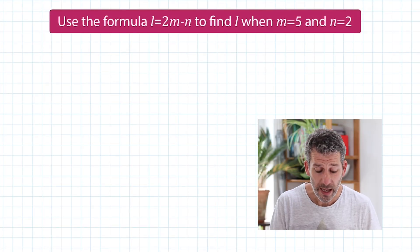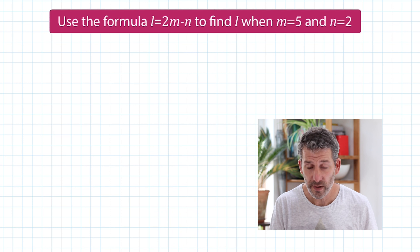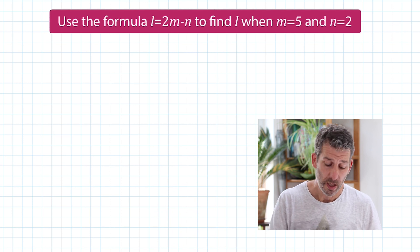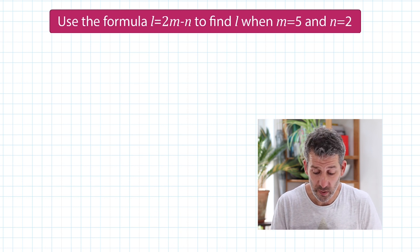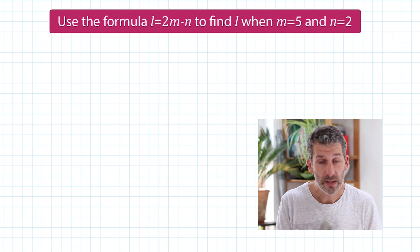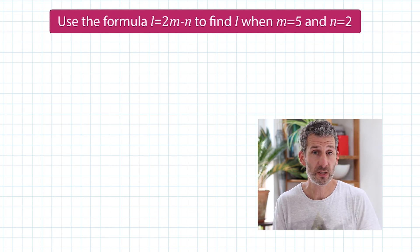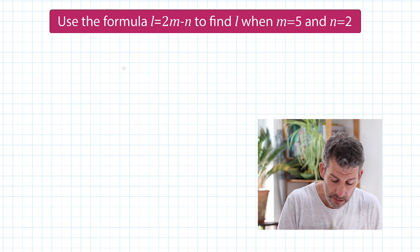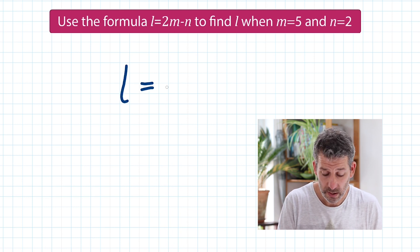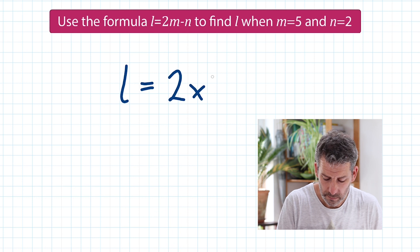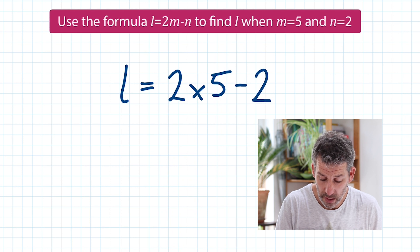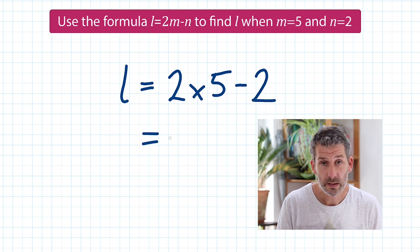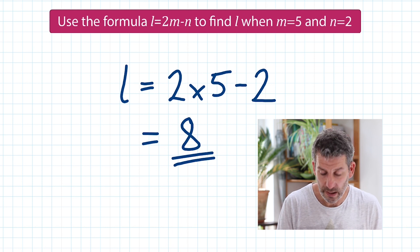Use the formula L equals 2M minus N to find L when M equals 5 and N equals 2. So we're going to work out what L is by replacing M and N with the actual numbers that they tell us, with the 5 and the 2. So don't forget when it says 2M, that means 2 times M. So L then is going to be equal to 2 times M. In other words, 2 times 5 minus N. In other words, minus 2 because N is 2. So 2 times 5 is 10. Take away 2 is 8. So L is equal to 8.